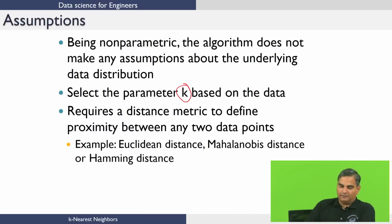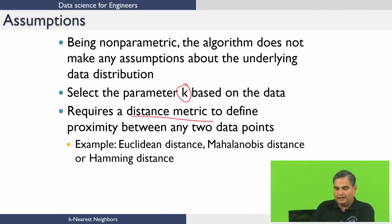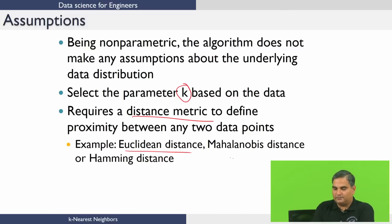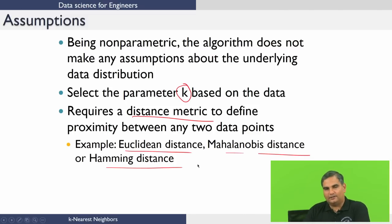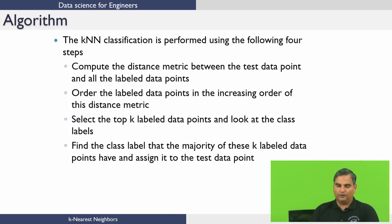The key thing is that whenever we talk about neighbors in data science, we have to talk about a distance between a data point and its neighbor. We really need a distance metric for this algorithm to work — this distance metric says what is the proximity between any two data points. The distance metric could be Euclidean distance, Mahalanobis distance, Hamming distance, and so on. There are several distance metrics you could use with K-Nearest Neighbor. In terms of the algorithm itself, it is performed using the following four steps.